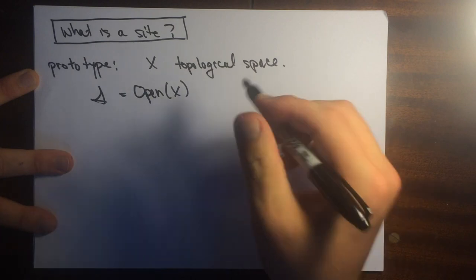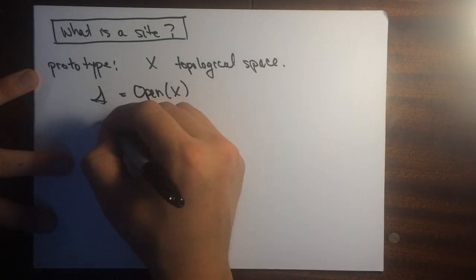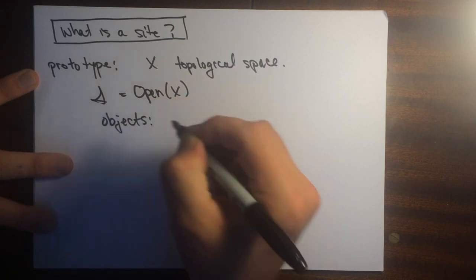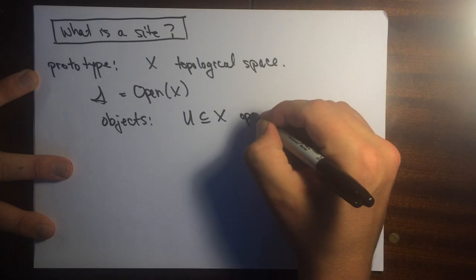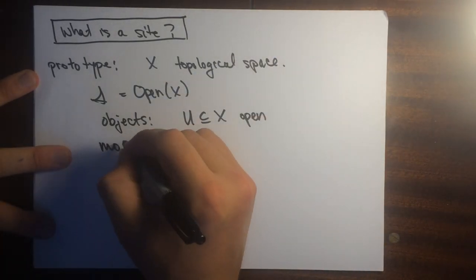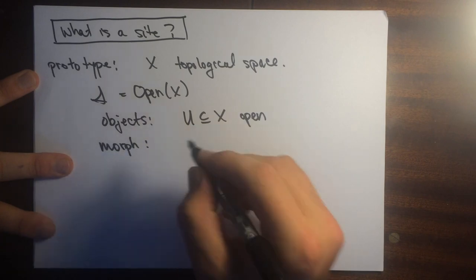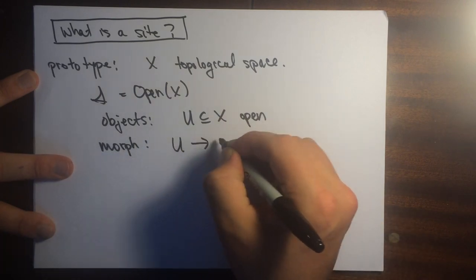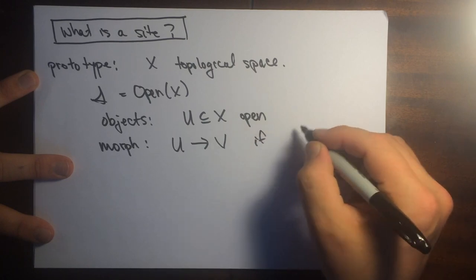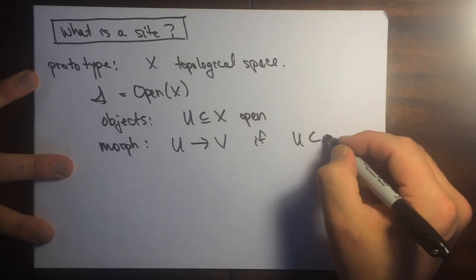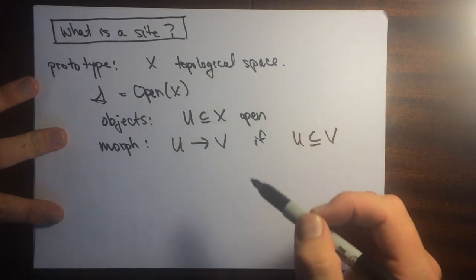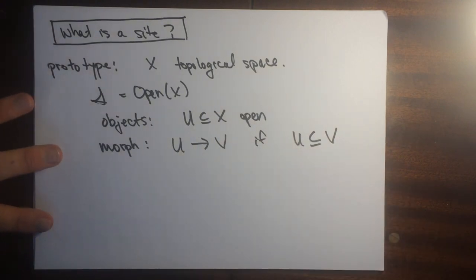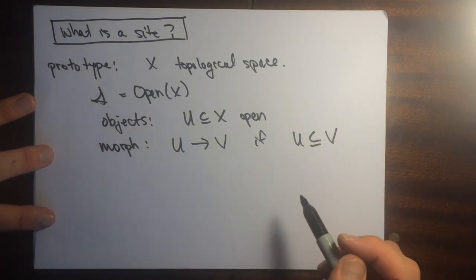This category has objects which are just the open subsets of this topological space. And then the morphisms in this category are going to be, we're going to have U mapped to V if these are both open subsets and U is contained in V. The objects are the open sets. The morphisms are just when we throw an arrow into this category whenever U is a subset of V.